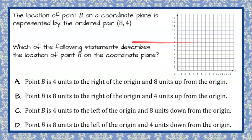Here's our question. The location of point B on a coordinate plane is represented by the ordered pair (8, 4). Which of the following statements describes the location of point B on the coordinate plane?